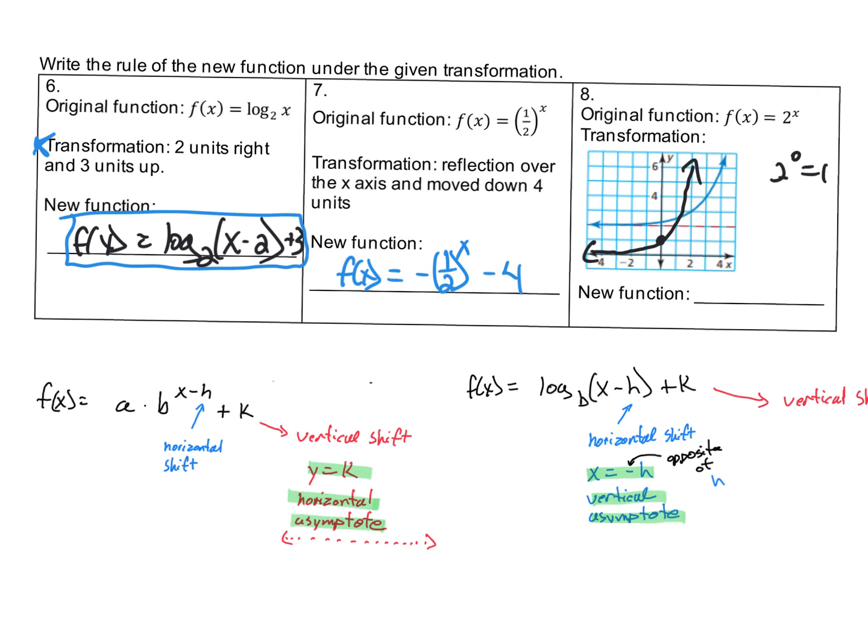Also, you can see it has shifted over 2 because you can see where that point is now. That transformation is over 2 and up 2, which needs to be reflected in our function. The over 2 is the horizontal shift.